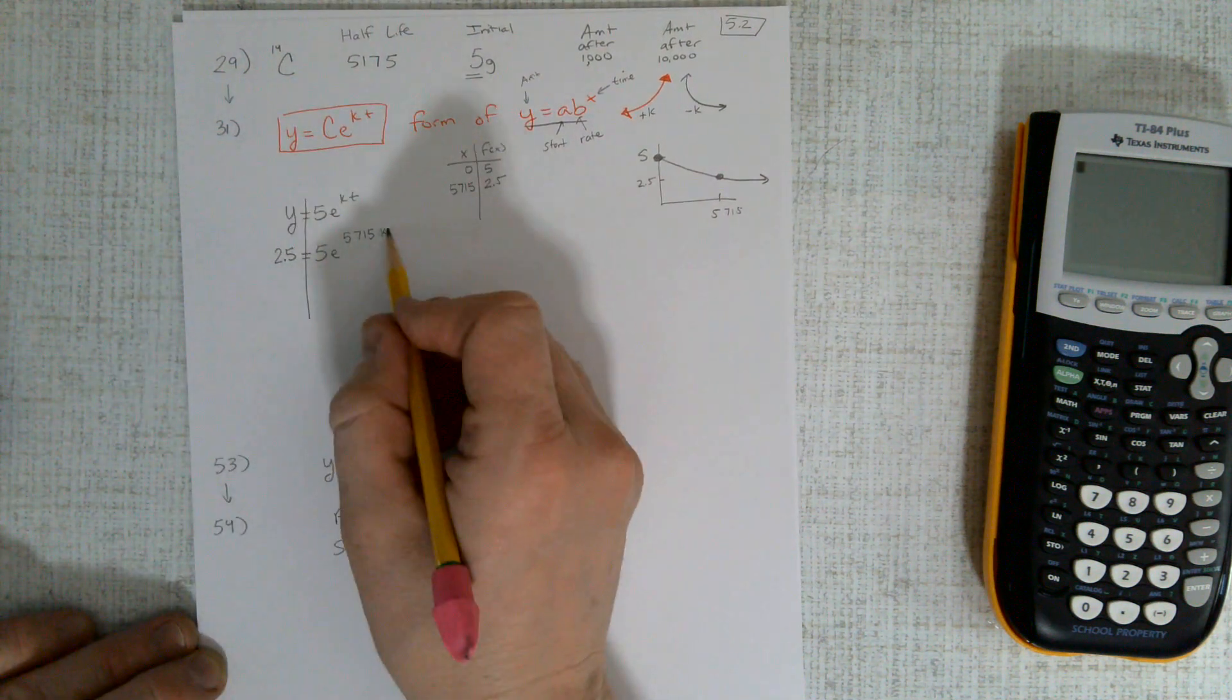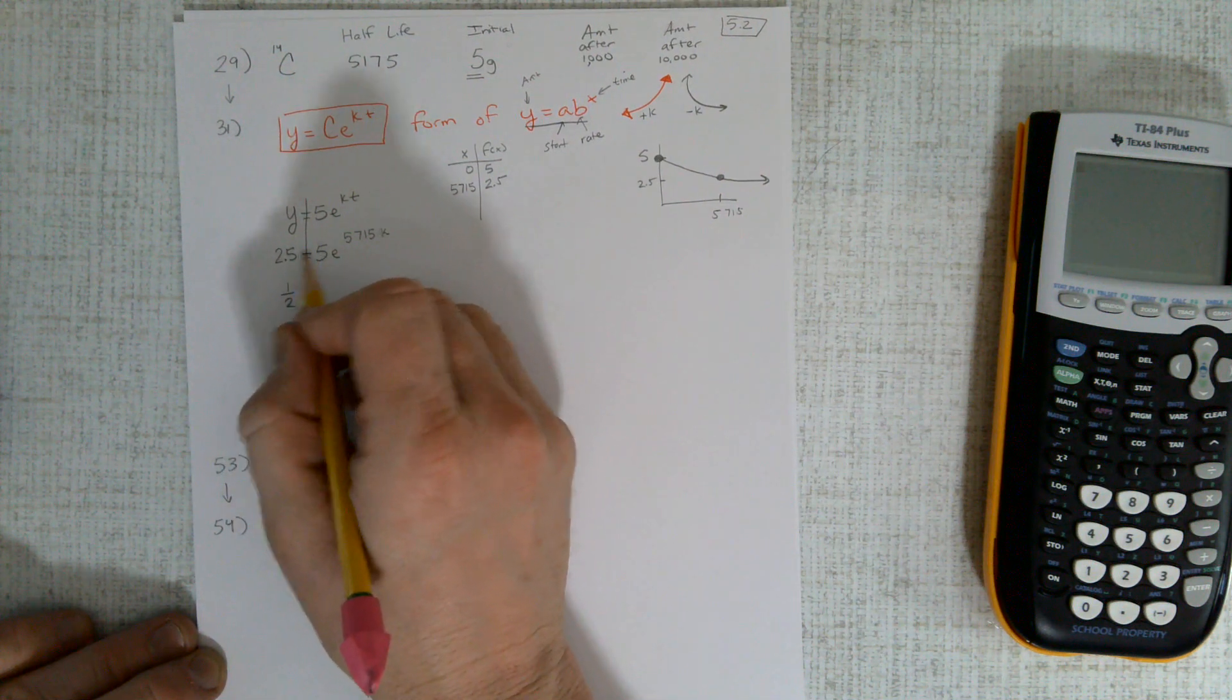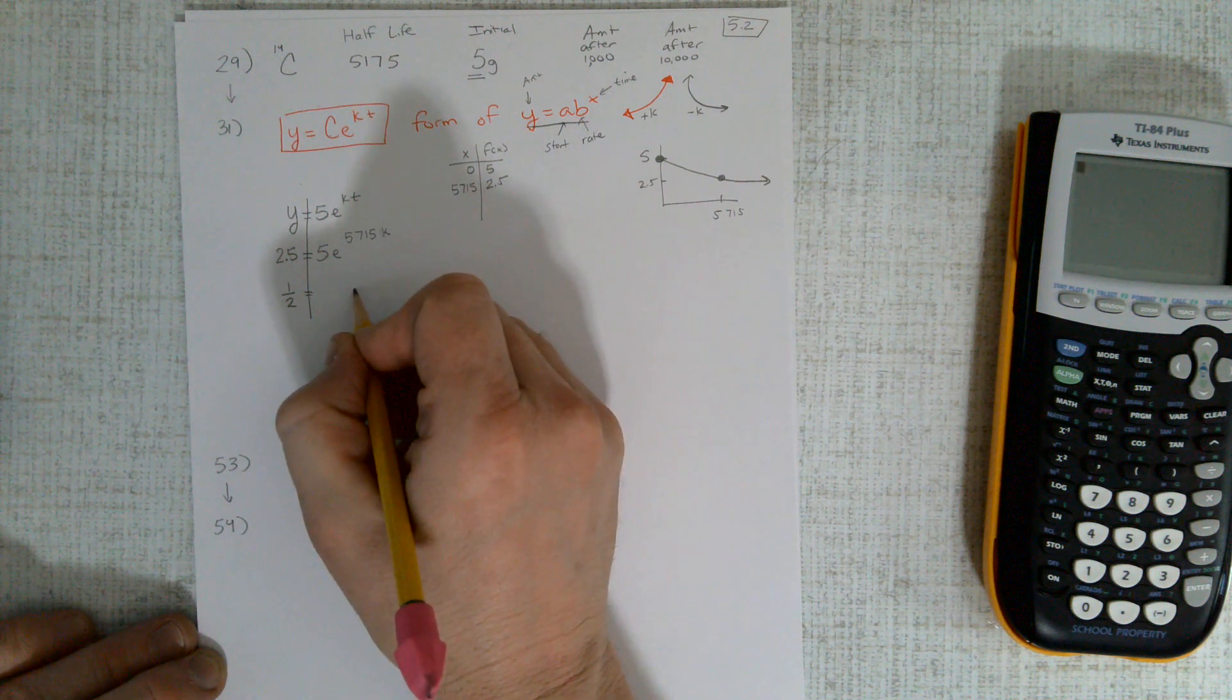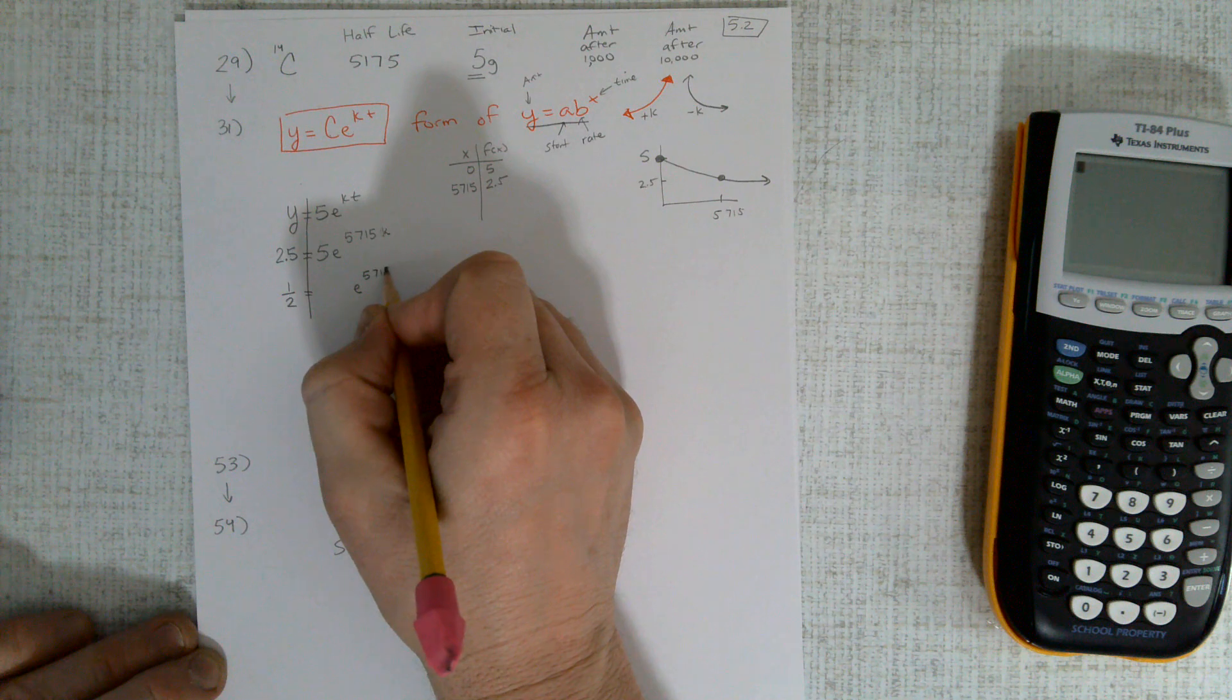All right, we have it all set up. Let's solve for k, divide this over. That'd be one-half, right, because 2.5 divided by 5 is a half. And we have e and we have this crazy exponent up here.